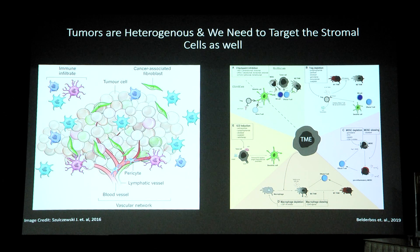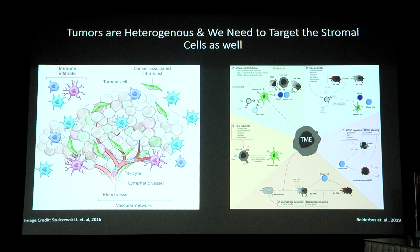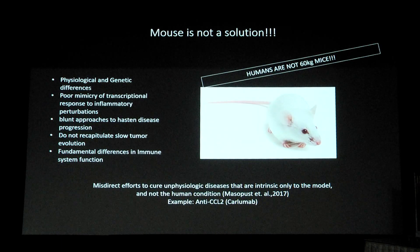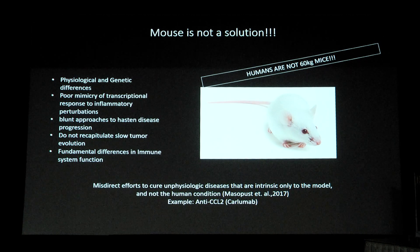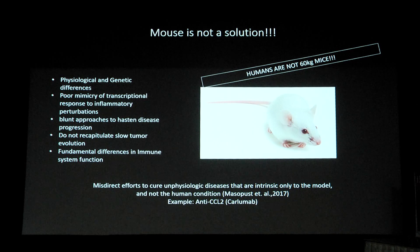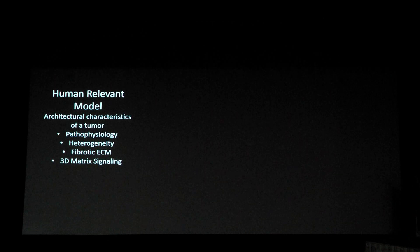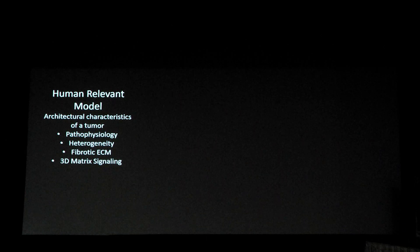Several attempts have already been made to target the tumor microenvironment — the classical example being checkpoint inhibitors, then T-cell or regulatory population depletion, cancer cell vaccines, and most importantly, depletion of immunosuppressive cells or their repolarization into anti-tumor cells. Macrophages have been a famous target for repolarization. However, previous studies have used the wrong model system — mouse — and since we are not 70 kg rats, we need a human-relevant model that recapitulates architectural characteristics of tumor, pathophysiology, heterogeneity, complex extracellular matrix, and crosstalk between different cell types.